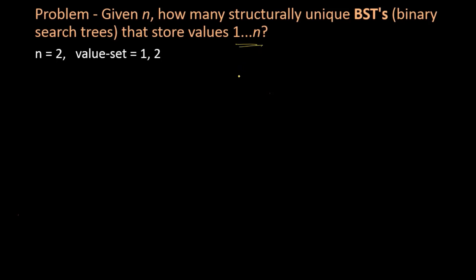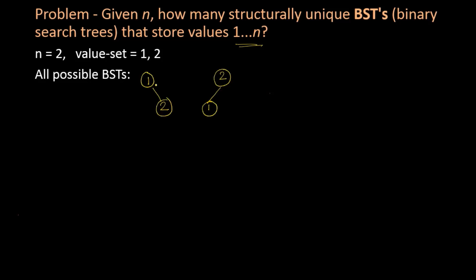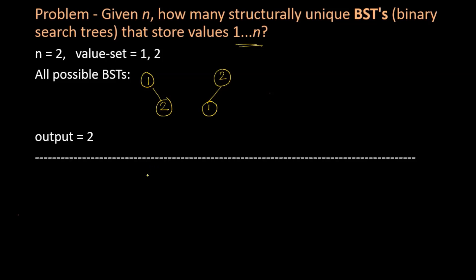If n is equal to 2, the values that would be used are 1 and 2, and all possible BSTs with these values are the trees 1→2 and 2→1. So the output that should be returned by our subroutine should be 2, because 2 BSTs could be formed.